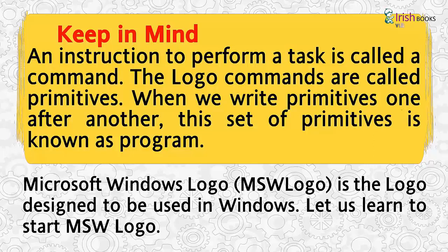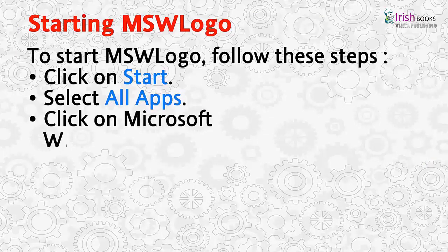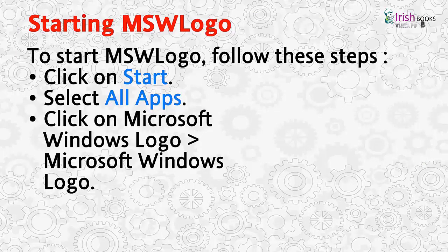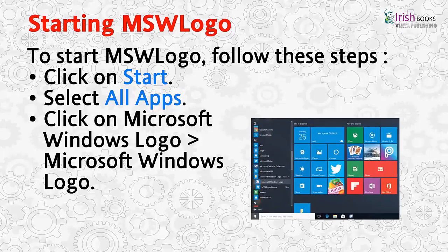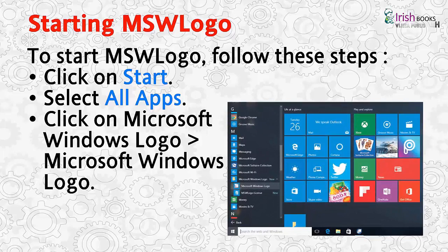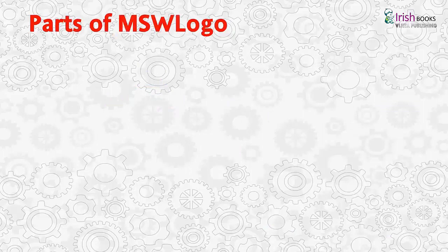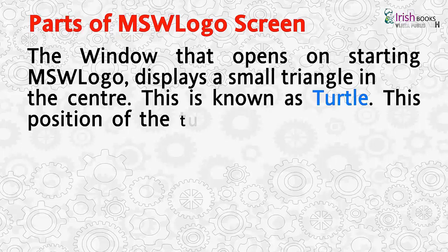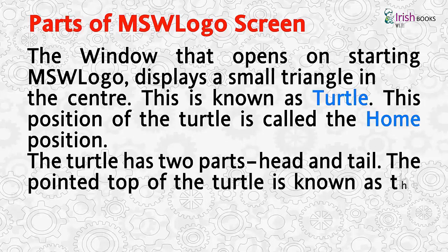Let us learn to start MSW Logo. To start MSW Logo, follow these steps: click on Start, select All Apps, click on Microsoft Windows Logo, and click on MSW Logo. The window that opens on starting MSW Logo displays a small triangle in the center.